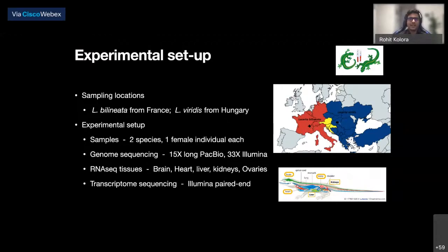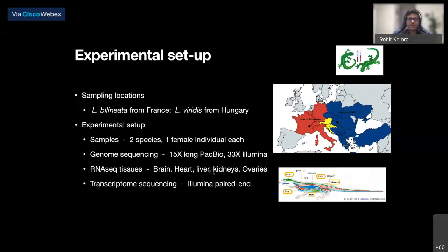The experimental setup was straightforward: we took two different samples, one from each species — one from France and another from Hungary — to sequence and compare the genomes and see what differences had accumulated. We took one female from each species, since we also wanted to look at the W chromosome, which is the heterogametic chromosome. We sequenced using PacBio and Illumina sequencing, and also performed RNA sequencing from five different organs: brain, heart, liver, kidneys, and ovaries.